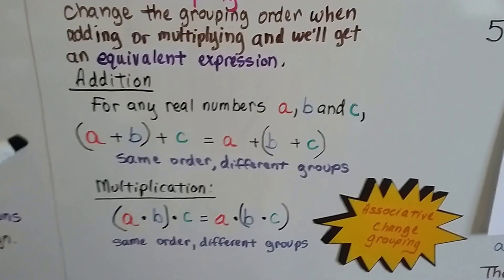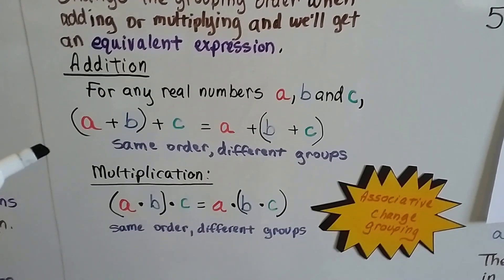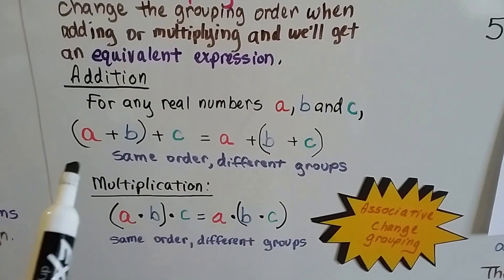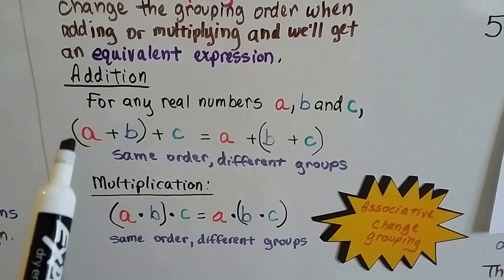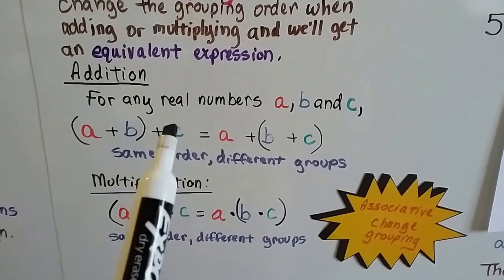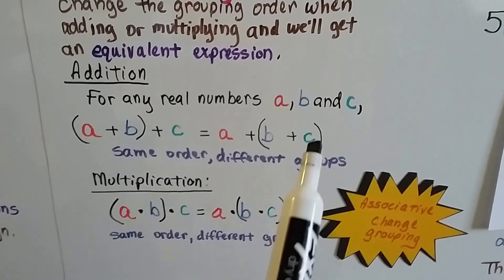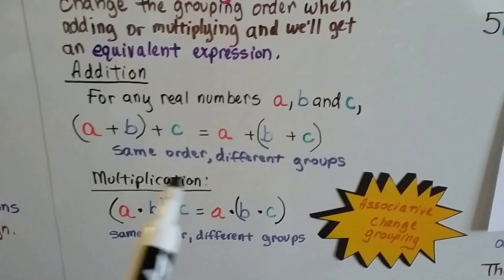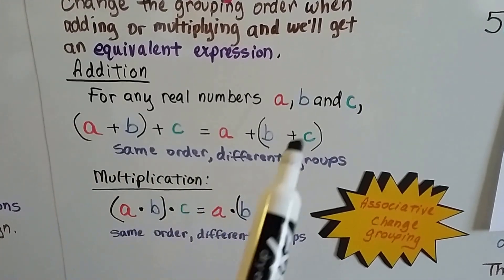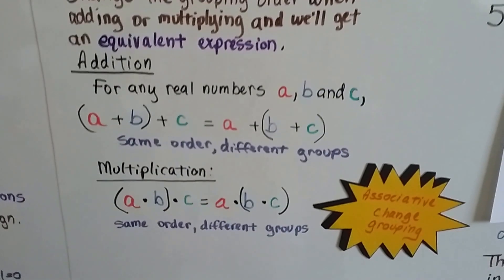So for addition, for any real numbers A, B, and C, I want you to notice that they're all in the same order. We have A, then B, then C. A, then B, then C. We just have parentheses around different ones. So they're in the same order. They're just grouped differently.